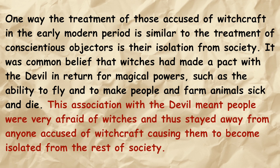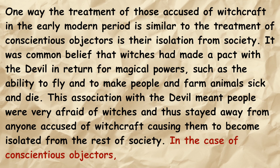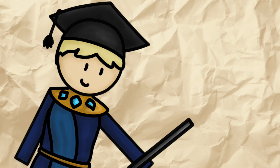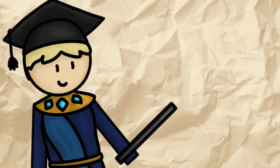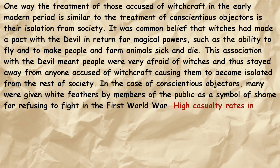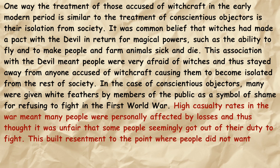So that's half the question done. Now it's time to address the other half: conscientious objectors. To show we are switching to the other topic, we could write 'In the case of conscientious objectors,' and then put our evidence. Some good SPEND about conscientious objectors might be that many were given white feathers by members of the public as a symbol of shame for refusing to fight in the First World War. Then we explain: high casualty rates in the war meant many people were personally affected by losses, and thus thought it was unfair that some people seemingly got out of their duty to fight. This built resentment to the point where people did not want to associate with conscientious objectors, and many became isolated from society.